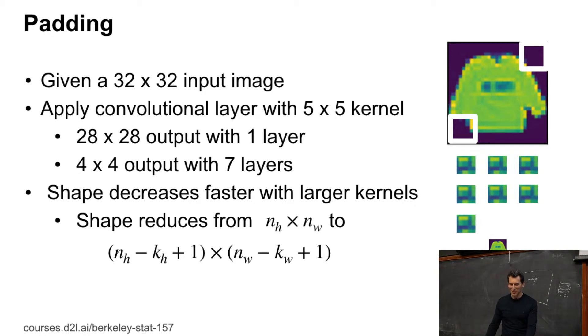So you have a 32 by 32 input image, and you apply a convolution with a 5 by 5 kernel. You get a 28 by 28 output after one layer, and after seven layers you have a 4 by 4 output.